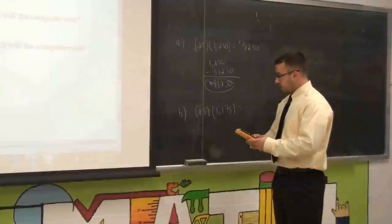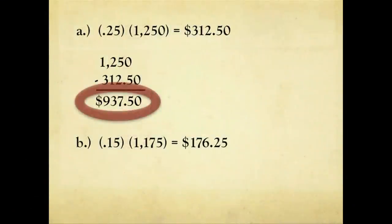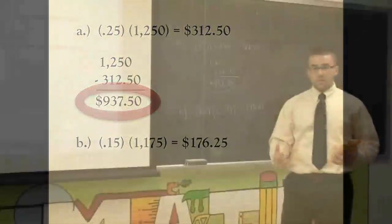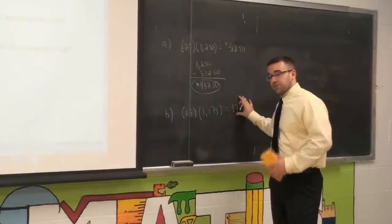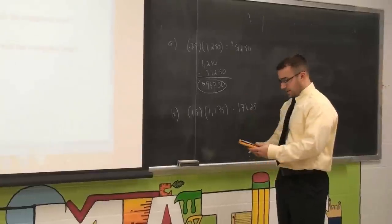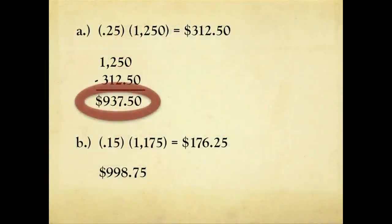And the computer is costing $1,175. So figuring out 15% of $1,175, you get $176.25. Now in this instance, remember what we said previously in part A, this is how much you're saving. It's not the actual cost. We need to subtract it from our original cost. And we get $998.75.